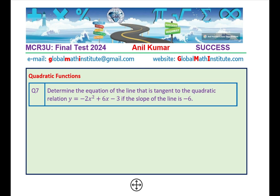Quadratic function is a major unit and so we have most questions based on quadratic functions in this particular final test review. Question number 7 here is determine the equation of the line that is tangent to the quadratic relation y = -2x² + 6x - 3 if the slope of the line is minus 6. This is an excellent question which has come in past IB test papers and understand its solution as it is going to help you in grade 12 courses.